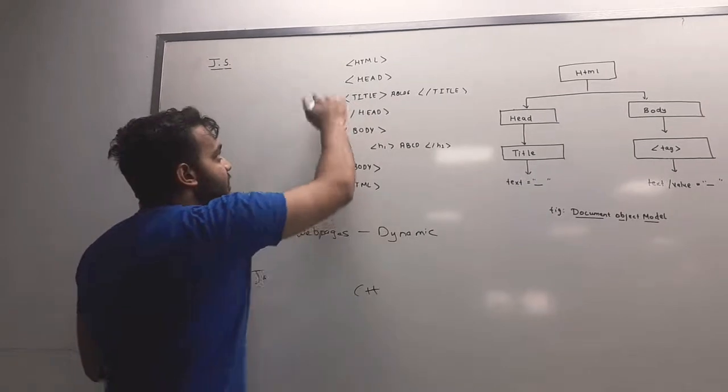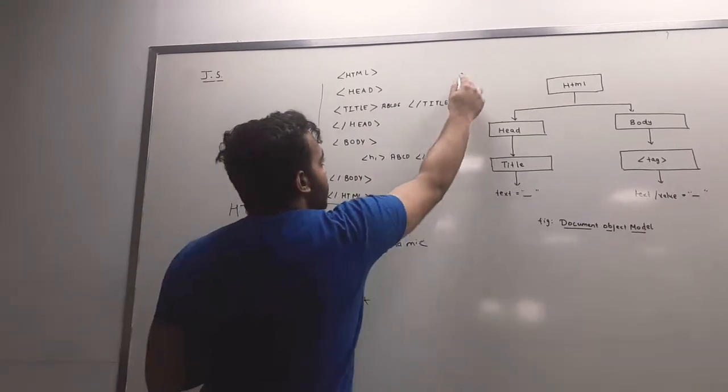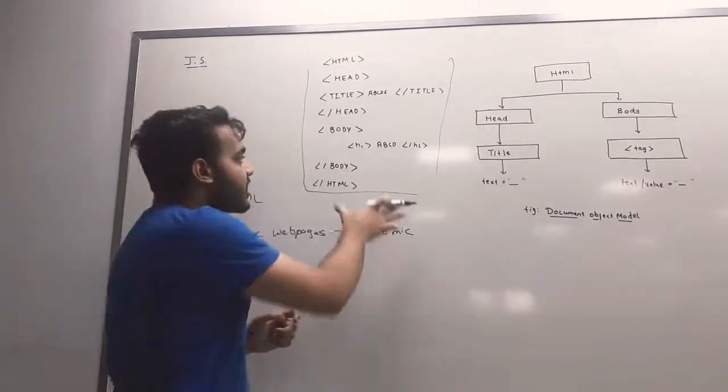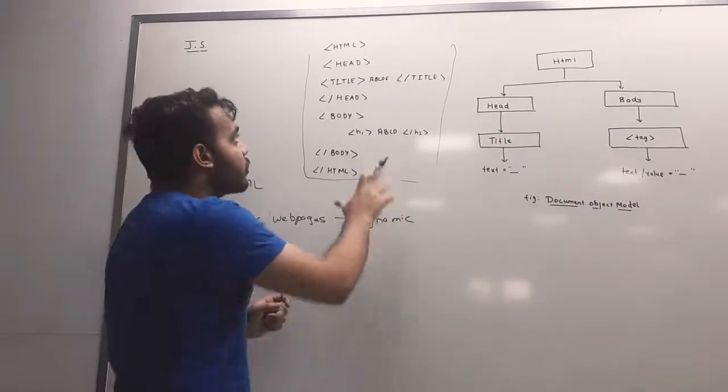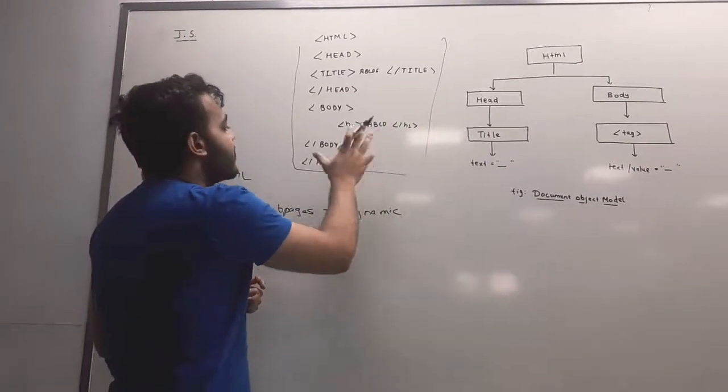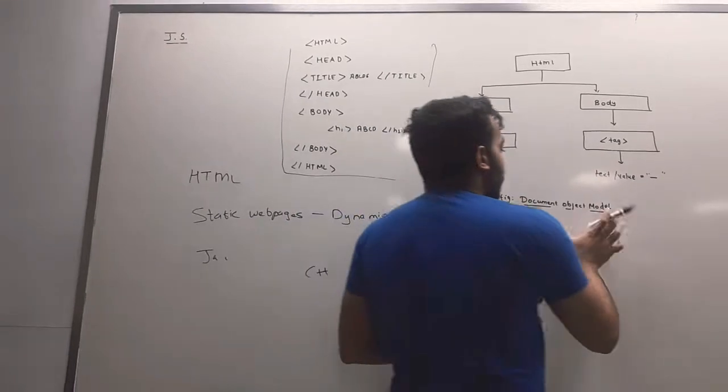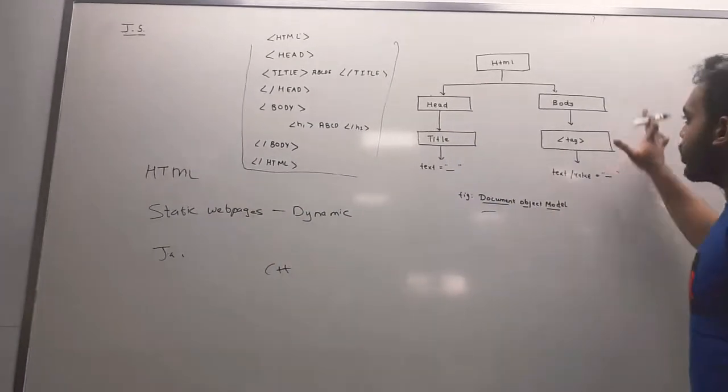So this is a common HTML code. But most browsers cannot understand the HTML code. So first we have to convert, the browser converts the HTML code into document object model.